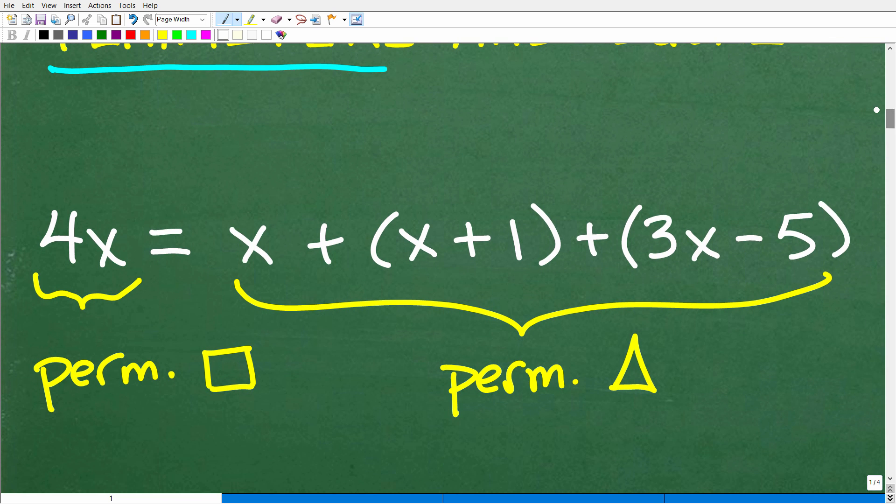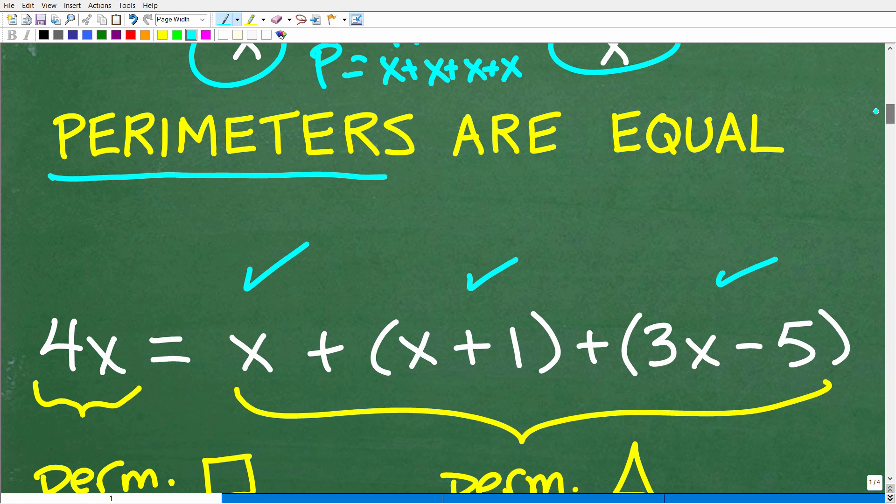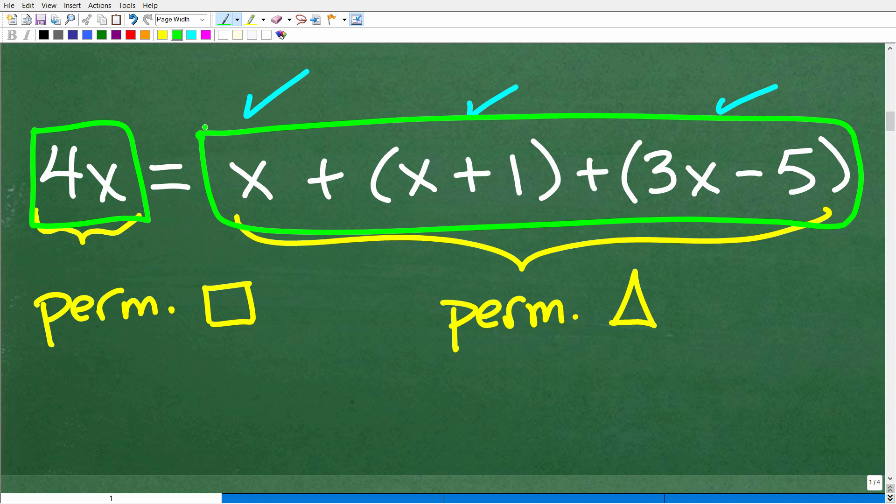So here is our perimeter of our square. It's 4x. The perimeter of the square is 4 times x. Now, the perimeter of the triangle is the sum of the three sides of the triangle. So that's x, x plus 1, and 3x minus 5. Now, we're being told that the perimeters are equal. So we're going to set the perimeters equal to one another. And now, what are we looking at? We're looking at a lovely algebraic equation. 4x is equal to all of this. And the goal now is to solve for x.